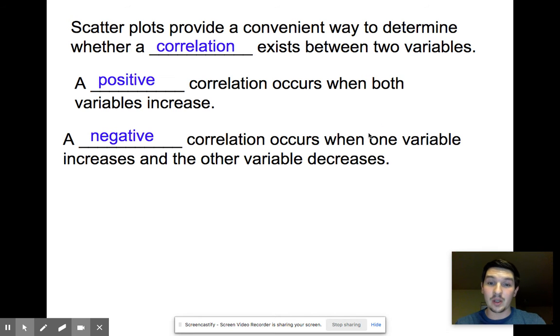We also have a negative correlation which occurs when one variable increases and the other variable decreases. So as your x increases, your y would be decreasing, which means you're going to get a negative correlation that goes down to the bottom right-hand side of your scatterplot.